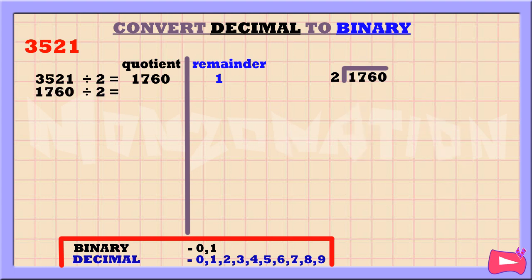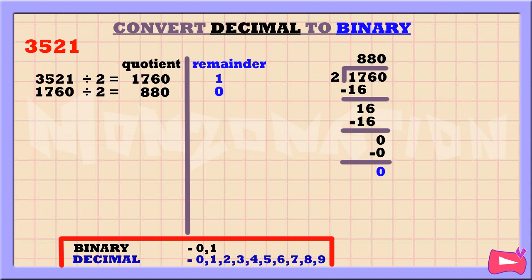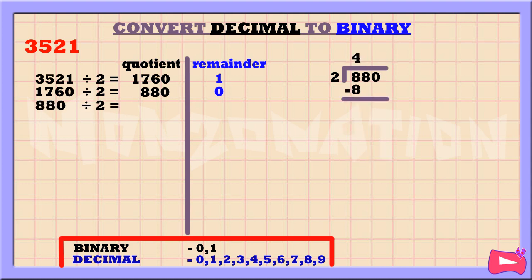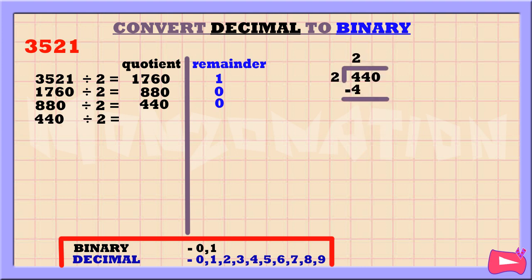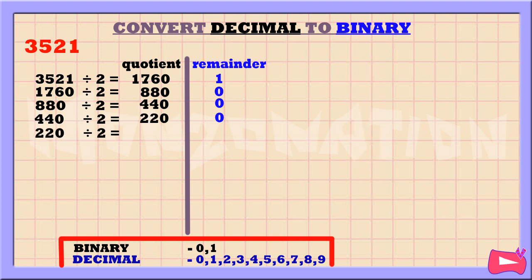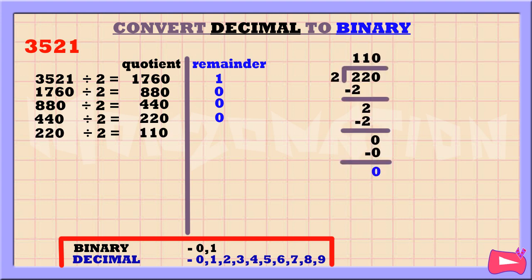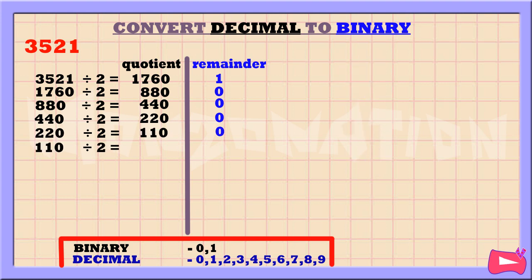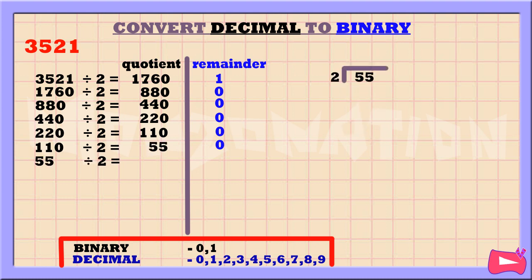Now let's take the quotient 1760 and divide it by 2. 1760 divided by 2 is 880, remainder 0. Let's continue dividing until the quotient becomes 0. 880 divided by 2 is 440, remainder 0. 440 divided by 2 is 220, remainder 0. 220 divided by 2 is 110, remainder 0. 110 divided by 2 is 55, remainder 0. And 55 divided by 2 is 27, remainder 1.